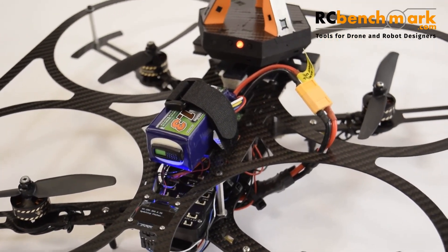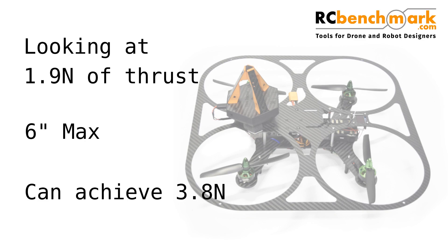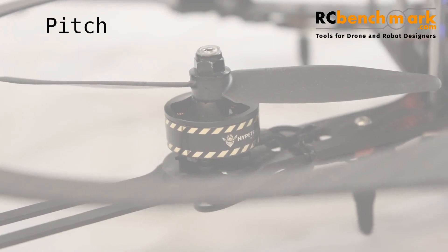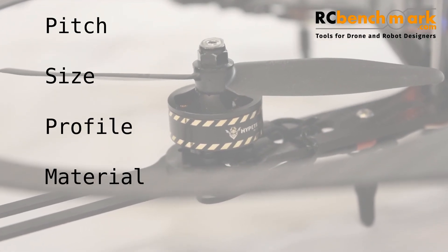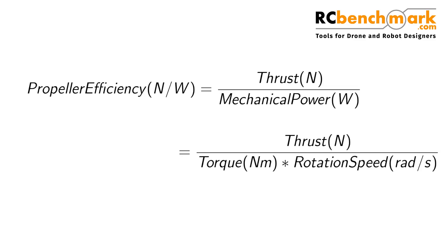In summary, we're looking for the most efficient propeller at 1.9 N of thrust that has a maximum size of 6 inches and that can achieve 3.8 N of peak thrust. We can vary parameters like pitch, size, propeller, material, and brand. A propeller converts mechanical power to thrust. The efficiency is then thrust divided by mechanical power, or thrust divided by torque and rotation speed.